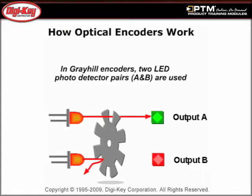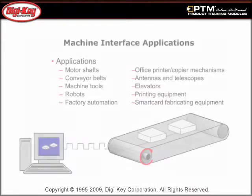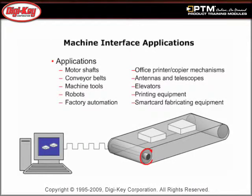Find out about the common types of encoders designed for human interface applications and what they are typically used for, including general purpose optical encoders, special function products, PCB mount, and high resolution encoders. Finally, learn about machine interface applications where encoders are used as a feedback device in a motion control system.